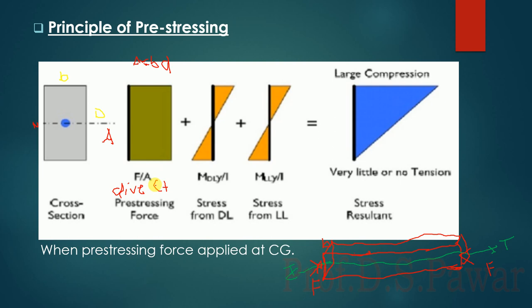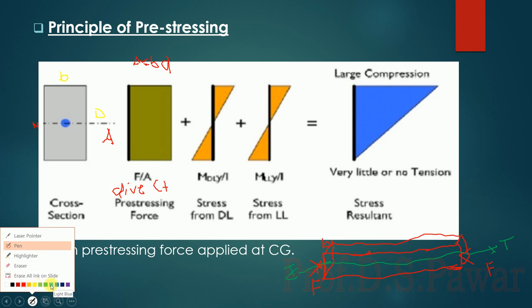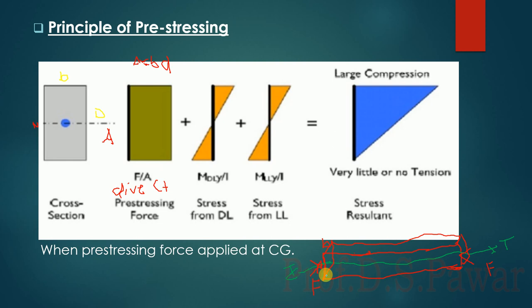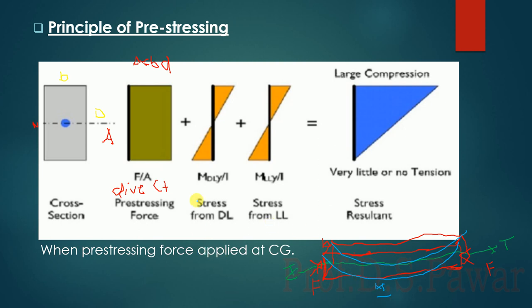The beam is not subjected with only the compression force. The beam is also subjected with self-weight, line load, and superimposed load. Due to the line load and superimposed load, the beam is going to bend, and due to this bending, the moment will come. When the moment comes, we have to calculate the bending stresses.